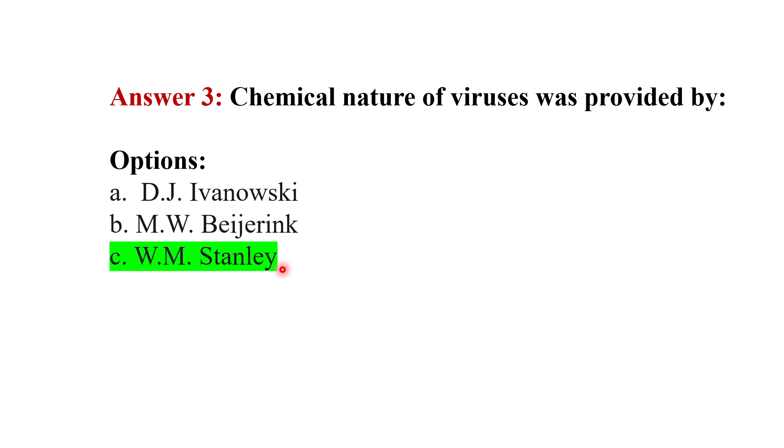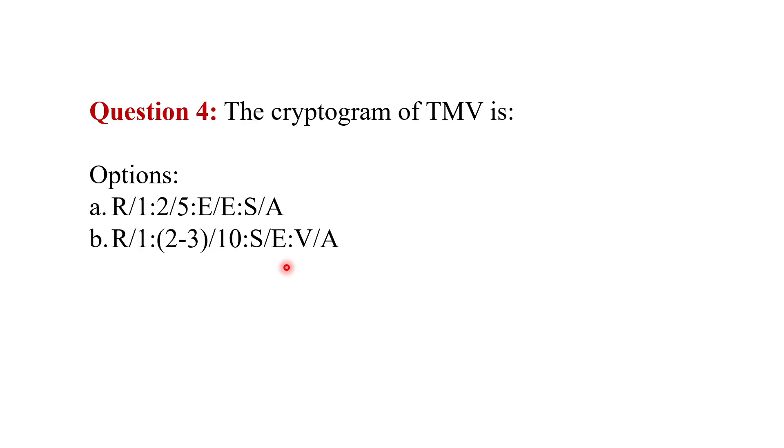The cryptogram of TMV is what? These are the two cryptograms mentioned, and the answer is R/1:2/5:E/E:S/A. This is the cryptogram of TMV, and the second option is the cryptogram of influenza virus.